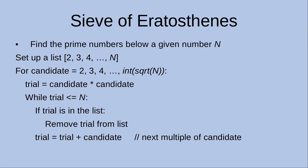This sieve is a method to find out the prime numbers that are below a given number called n. The algorithm sets up a list of integers starting with 2, 3, 4, up to n. Then we set up some candidates to test whether a candidate can help regenerate some composite numbers. The candidates can be 2, 3, 4, up to the integer part of the square root of n.